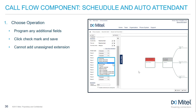GoToExtension will transfer a call to the extension designated on the auto attendant. For example, if we use the name operator, we could program the operator extension so that if a user presses 0, the recorded prompt would say something like 'to speak to an operator, dial 0.' Transfer to Extension is similar to GoToExtension, but will notify the caller that their call is being transferred without announcing a destination name or extension. Select the checkmark to approve your programming.